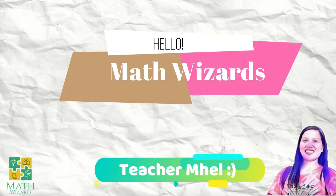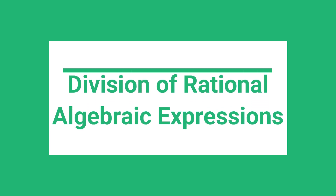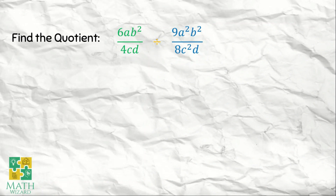Hello everyone, this is teacher Mel, and for today's discussion, we're going to focus on how to divide rational algebraic expressions. We have this first example: find the quotient of 6ab squared over 4cd, divided by 9a squared b squared over 8c squared d squared.